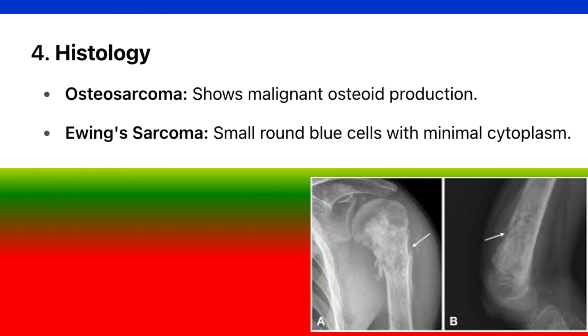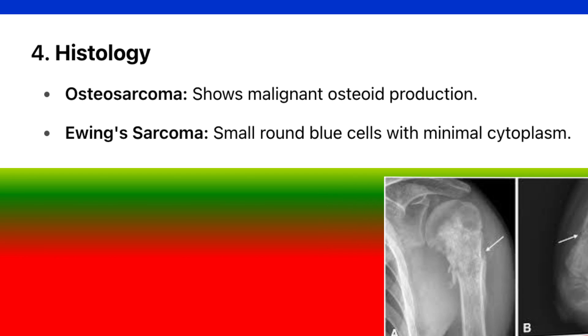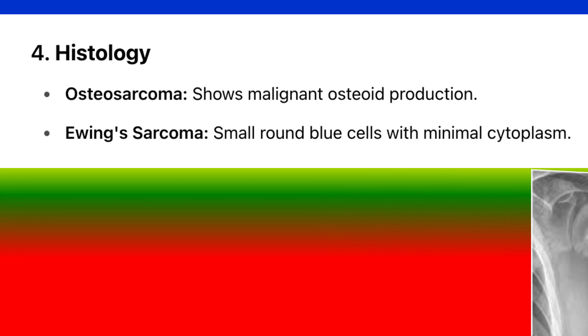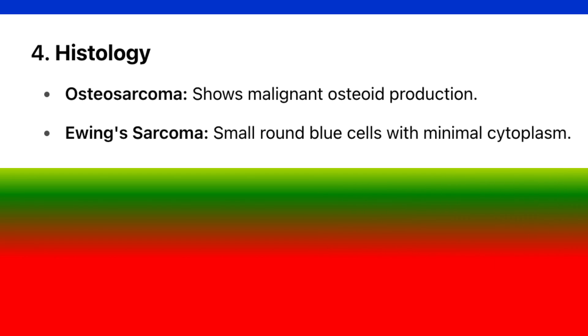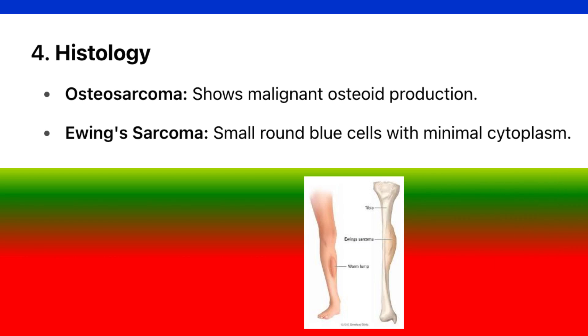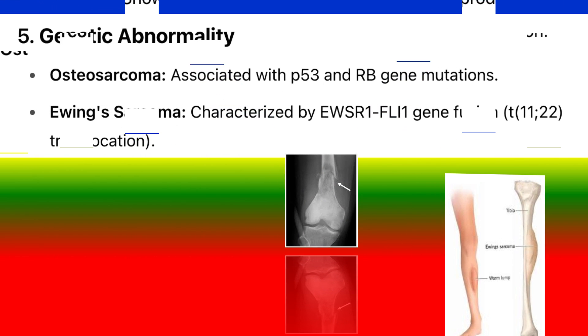4. Histology. Osteosarcoma: shows malignant osteoid production. Ewing's sarcoma: small round blue cells with minimal cytoplasm.